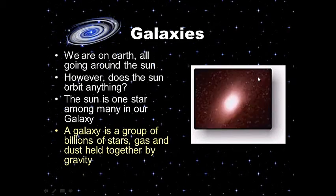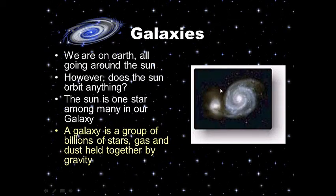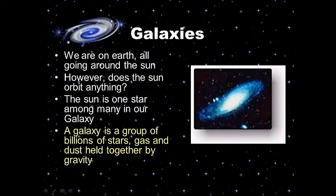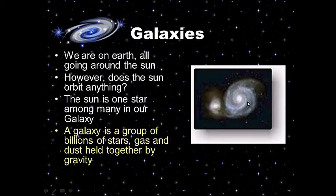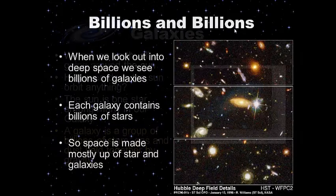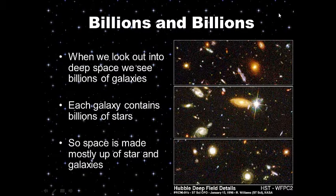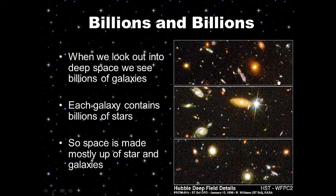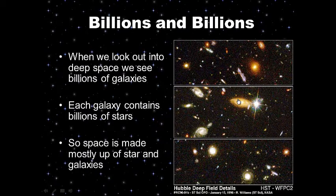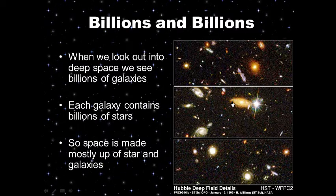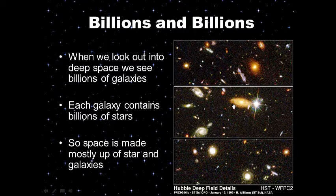Each picture here shows a galaxy, and each galaxy contains billions of stars, gas, and dust, held together by gravity. When we look into deep space we see billions upon billions of galaxies, and these billions of galaxies all contain billions of stars. These galaxies are shining brightly because they contain billions of stars, gas, and dust.